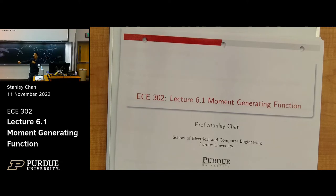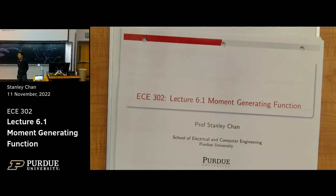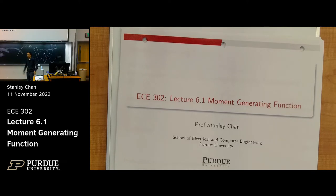Central limit theorem tells you: if you have a lot of distributions — regardless if they are uniform, exponential, Bernoulli, or whatever — if you sum them up, it will become Gaussian. Very powerful result. This is the basis for a lot of things you may not like: P test, T test, Z test, and all the other tests. All these kinds of tests are based on Gaussian assumptions. So if you know where the sample mean comes from, you'll be able to analyze those problems. This is really an important milestone in statistics.